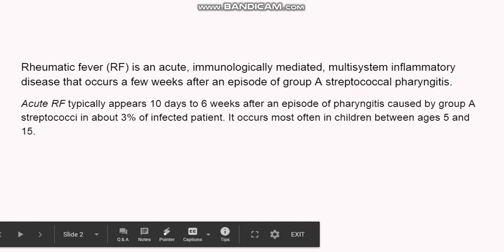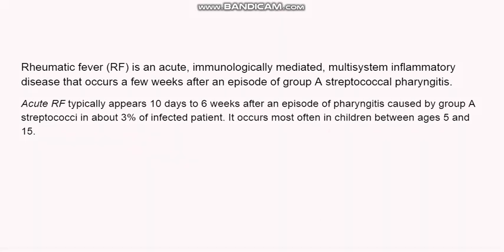Firstly, what is rheumatic fever? Rheumatic fever is an acute immunologically mediated inflammatory disease which occurs a few weeks after an episode of group A streptococcal pharyngitis. So firstly there is pharyngitis, after which an immunologically mediated reaction takes place, which is known as rheumatic fever. Acute rheumatic fever occurs mostly after 10 days to 6 weeks after exposure to group A streptococcal, and this occurs in only about 3% of infected patients.